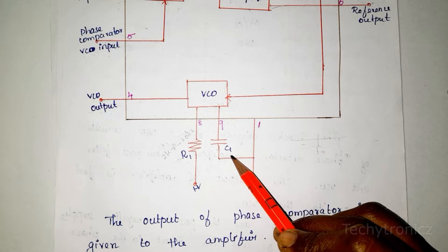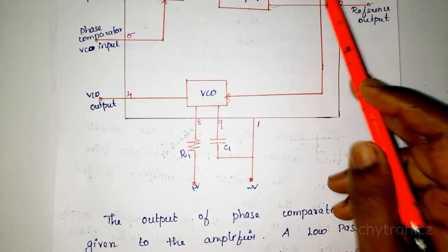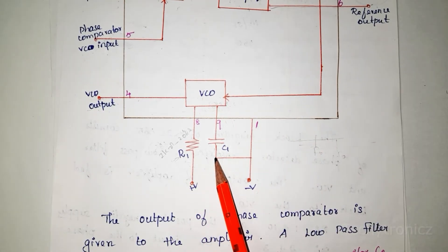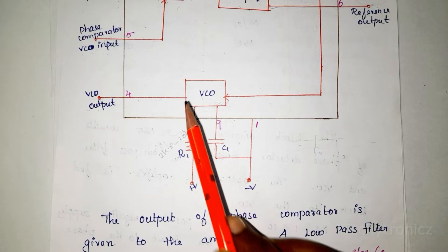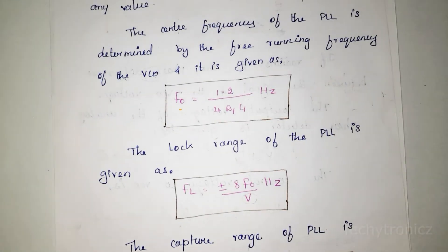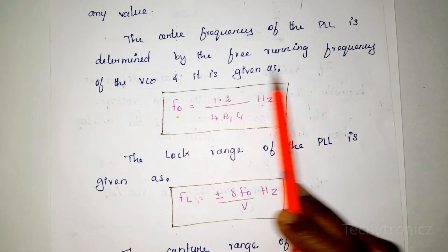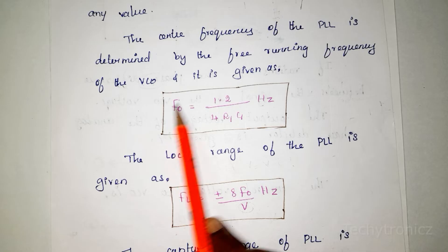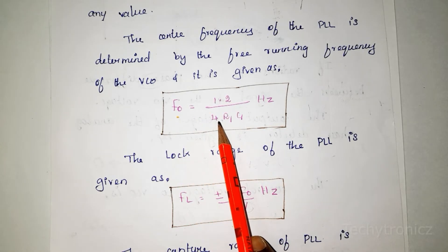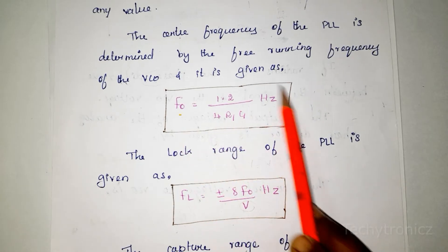The output from the amplifier along with R1 and C1 determine the center frequency of the PLL. The center frequency of PLL is determined by the free running frequency of VCO and is given as: F0 = 1.2 / (4 × R1 × C1) Hz. This is the center frequency.